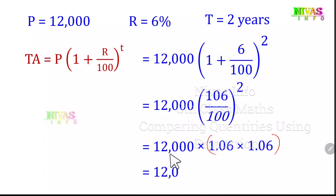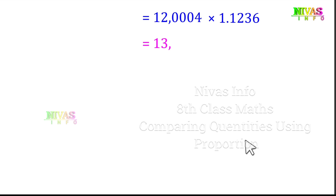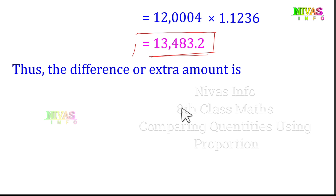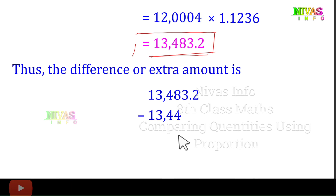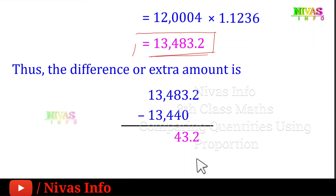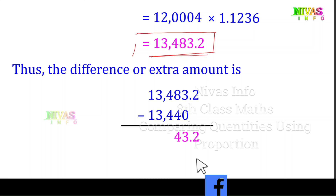After multiplication, 12,000 into 1.1236 gives us 13,483.2. So the compound interest amount is 13,483.2. The difference between the compound interest amount 13,483.2 and the simple interest amount 13,440 is 43.2. So the extra amount to be paid under compound interest compared to simple interest is Rs. 43.2.